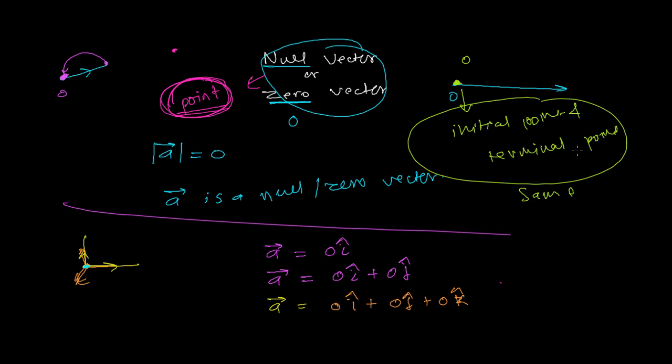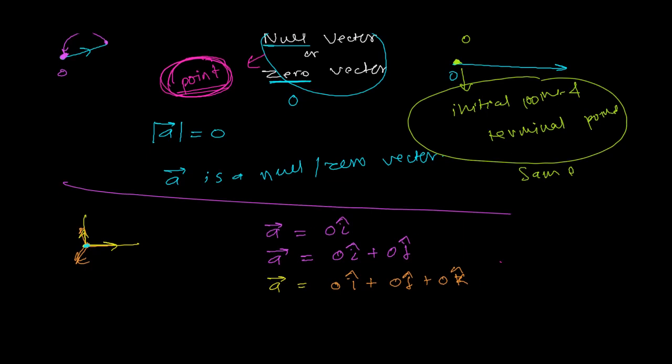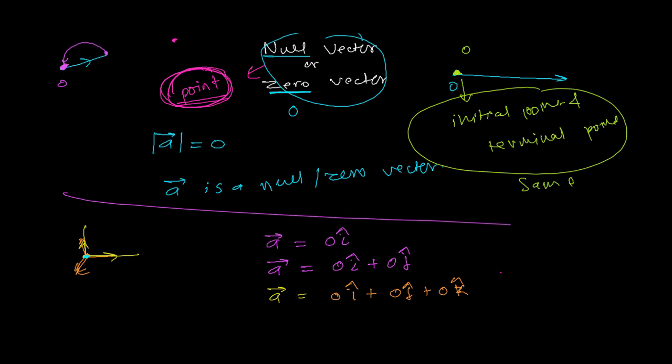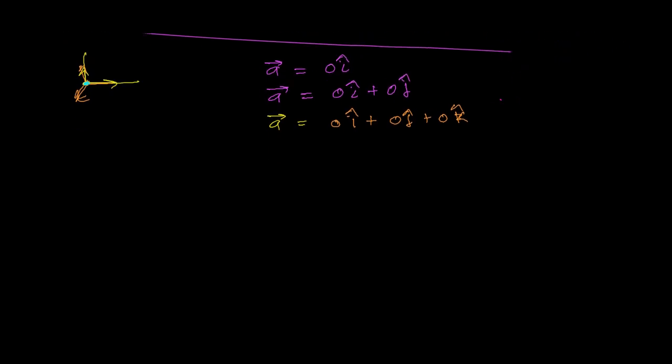In the previous video, we discussed about the null vectors, which is also known as zero vectors. Those vectors which have the magnitude zero are called zero vectors or null vectors. Now let's learn equal vectors.